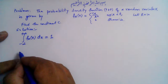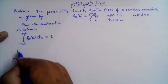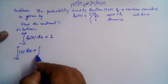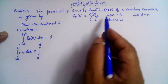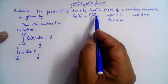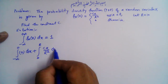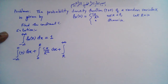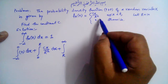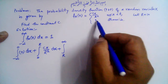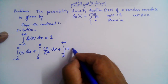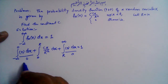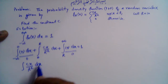We can break down the integral: from minus infinity to 0, f(x) = 0, so that part contributes 0. From 0 to r, f(x) = cx over r squared. From r to plus infinity, f(x) = 0 again. So we are left with only the middle integral: the integral of cx over r squared dx from 0 to r equals 1.